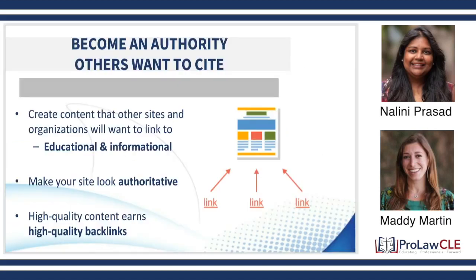How do you become an authority? The first step is having great content. Great content naturally will have people wanting to cite you. If you have charts or information on your site that people would normally link to a .gov, maybe they'll link to your authoritative page instead. For example, if you list the most dangerous intersections in stat form, a nonprofit working to make roads safer might want to link to your site as a resource — not linking to a lawyer site, but to an informational page.